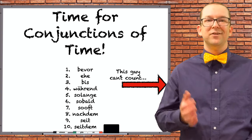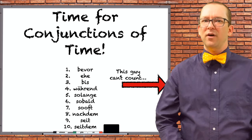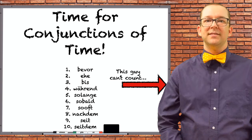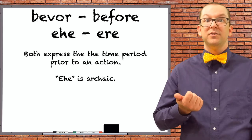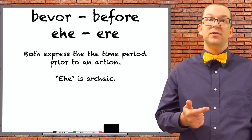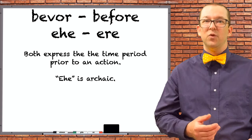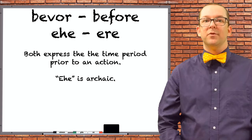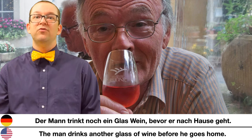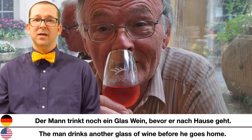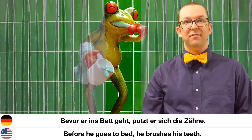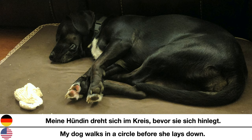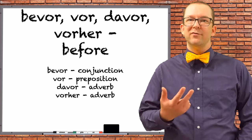The rest of the conjunctions all have to do with time — there are twelve of them. Let's start with the 'befores.' There are two subordinating conjunctions in German that mean before: bevor, which is the same as the English version, and ehe, which is archaic. Examples of bevor: 'Der Mann trinkt noch ein Glas Wein, bevor er nach Hause geht.' — The man drinks another glass of wine before he goes home. 'Bevor er ins Bett geht, putzt er sich die Zähne.' — Before he goes to bed, he brushes his teeth. 'Meine Hündin dreht sich im Kreis, bevor sie sich hinlegt.' — My dog walks in a circle before she lays down.